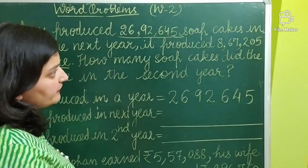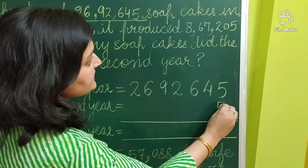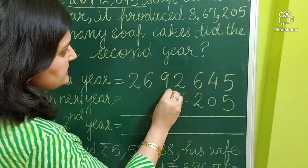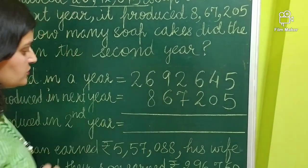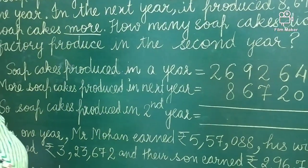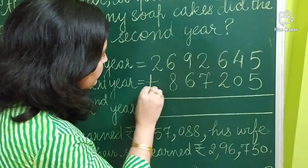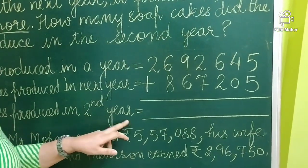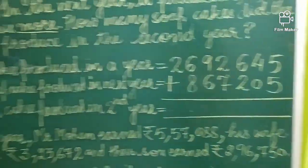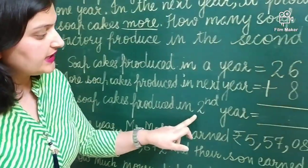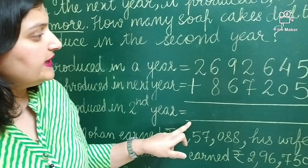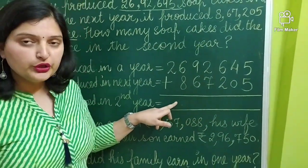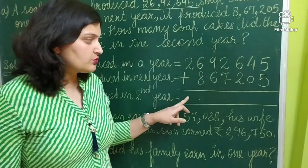Now, how do we write the numbers? Starting from one space: 5, 0, 2, 7, 6, 8. We have to add these numbers and we will get our answer. Soap cakes produced in the second year will be equal to the sum of these two numbers. You all will solve this question yourselves.